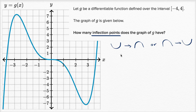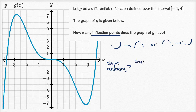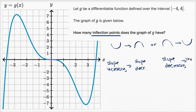Another way you could think about it: inflection points occur where our slope goes from increasing to decreasing, or from decreasing to increasing.